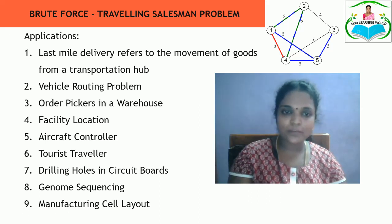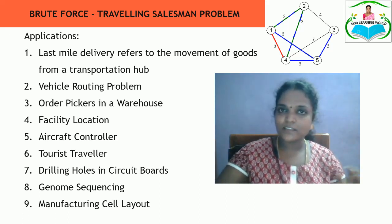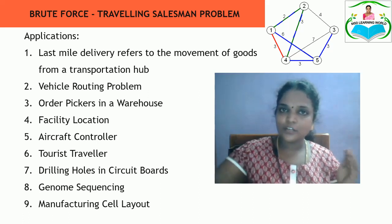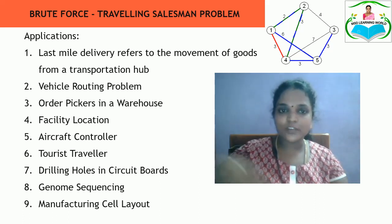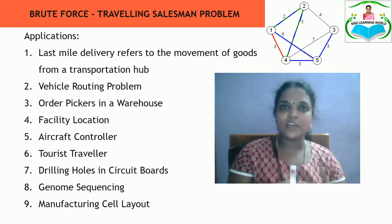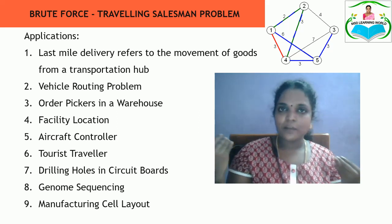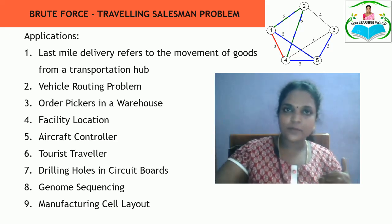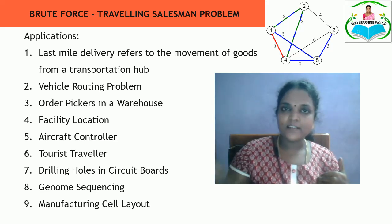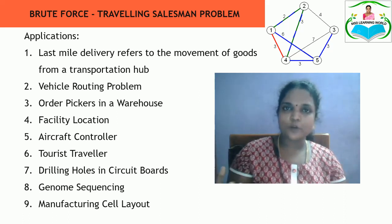Another application is drilling holes in a circuit board. When connecting a source hole to a destination hole, you need intermediate holes in between. You should make the fewest intermediate holes so that you reach the destination hole via the shortest path. Also, genome sequencing and manufacturing cell layout — when building a large facility, you must design a proper layout to reach the final route with the shortest distance for keeping devices and equipment.